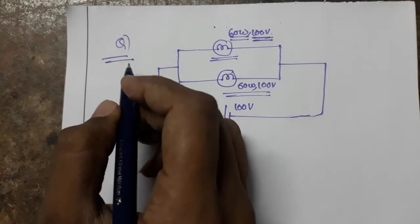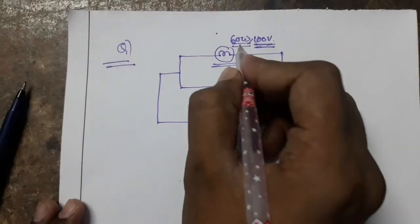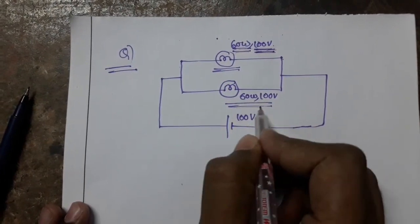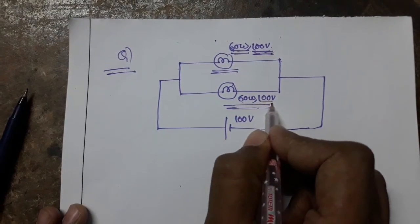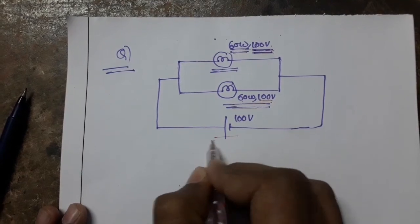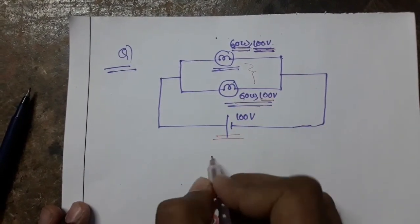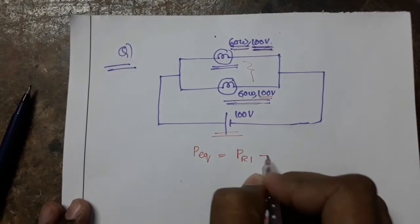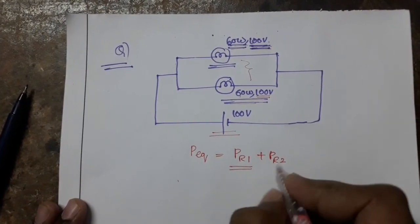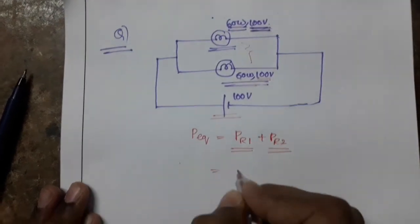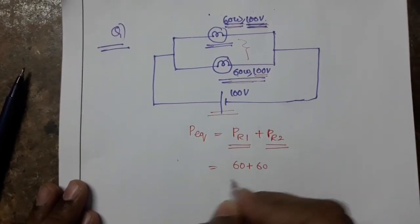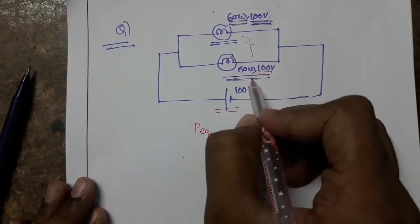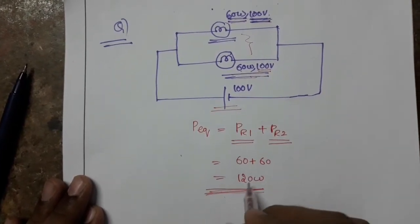For this question: power rating of bulb 1 = 60 watts, voltage rating = 100 V; power rating of bulb 2 = 60 watts, voltage rating = 100 V; supply voltage = 100 V. These two bulbs are connected in parallel, so P equivalent = PR1 + PR2 = 60 + 60 = 120 watts. When two 60-watt bulbs are connected in parallel, the equivalent power is 120 watts.